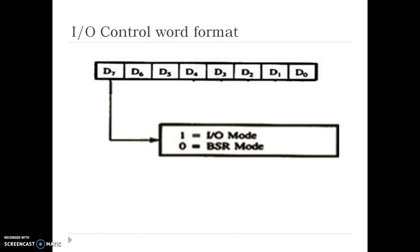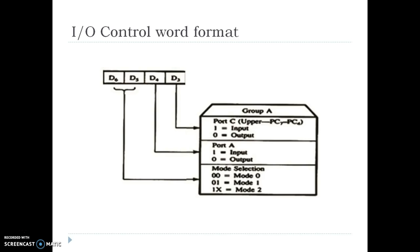D7: if bit D7 is assigned 1, then this control word is an input-output mode control word; if it is assigned 0, then it is a bit-set-reset mode. The bits from D6 to D3 are assigned to Group A. Bits D6 and D5 indicate in which mode Port A and Port C upper will be working, either in mode 0, mode 1, or mode 2. If pin D4 is assigned 1, that means Port A is working in input mode; if it is 0, then Port A is working as the output port. Same goes for Port C: if D3 is 1, then Port C upper is working as an input port; if 0, then Port C upper is working as an output port.